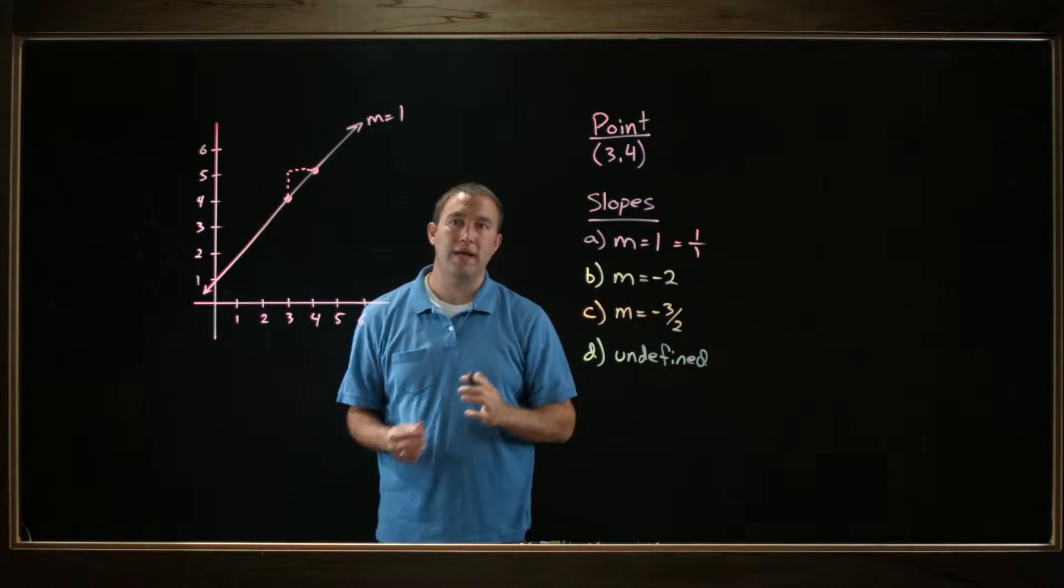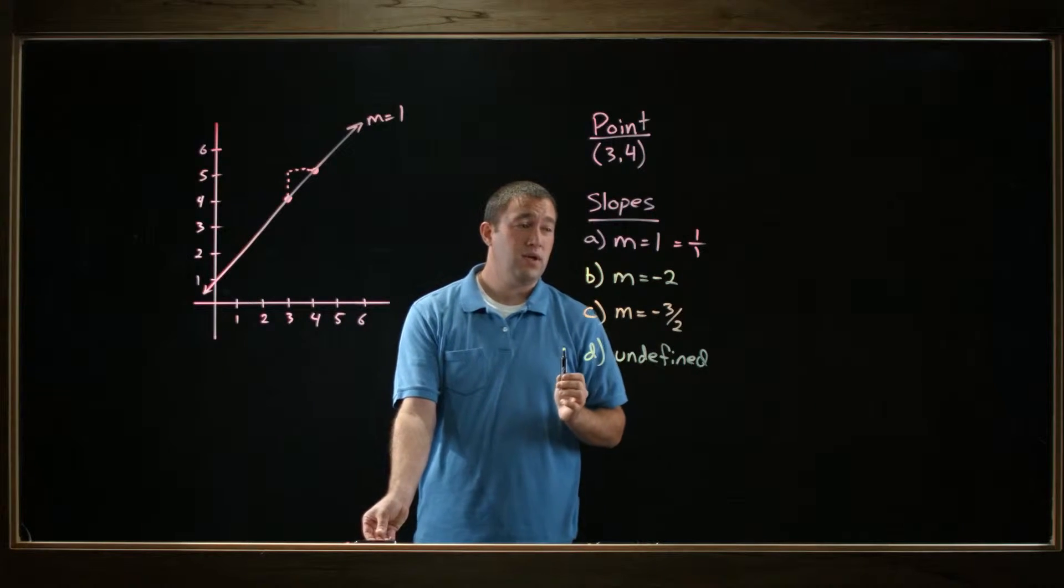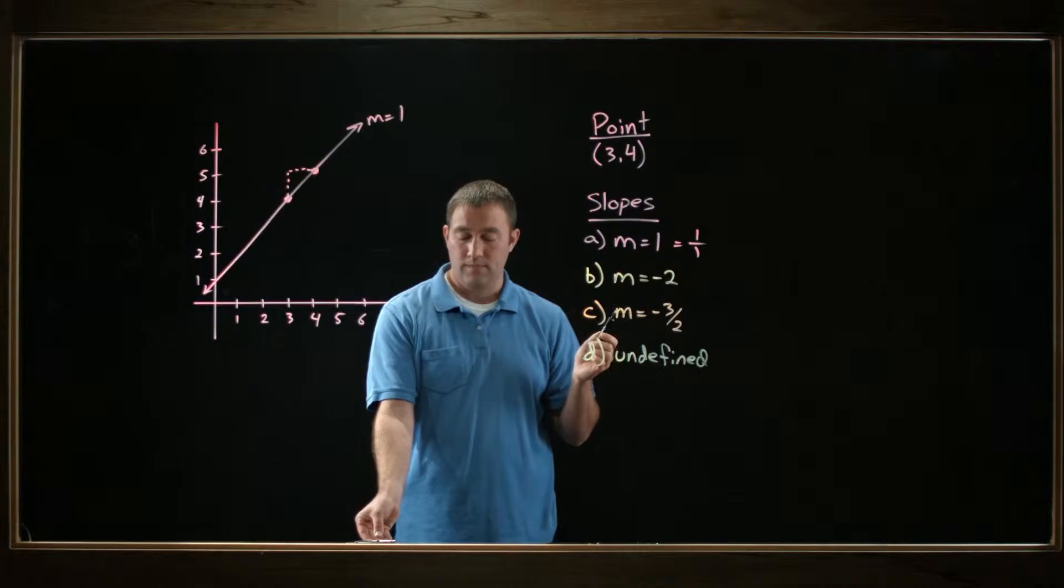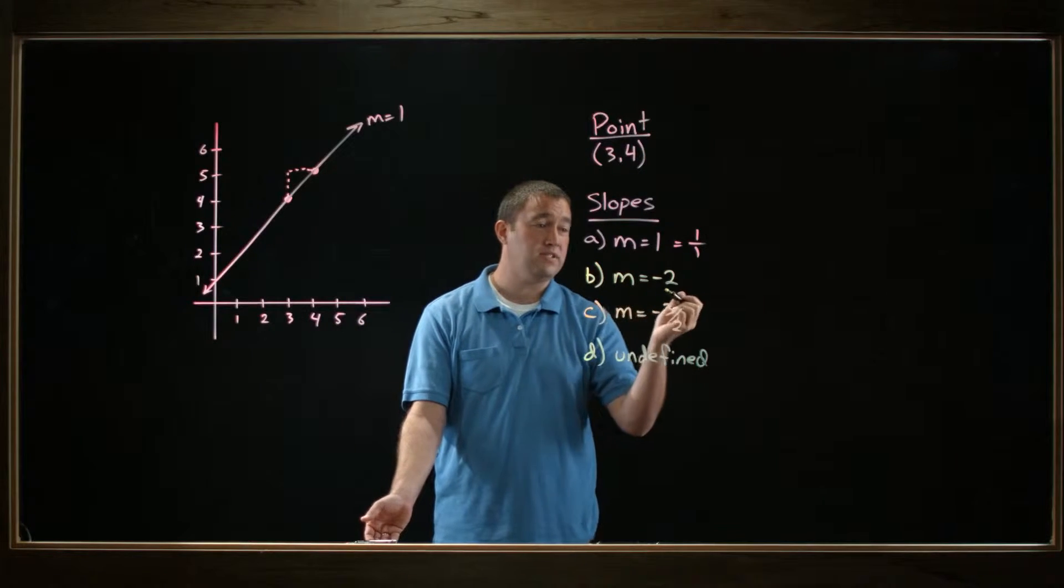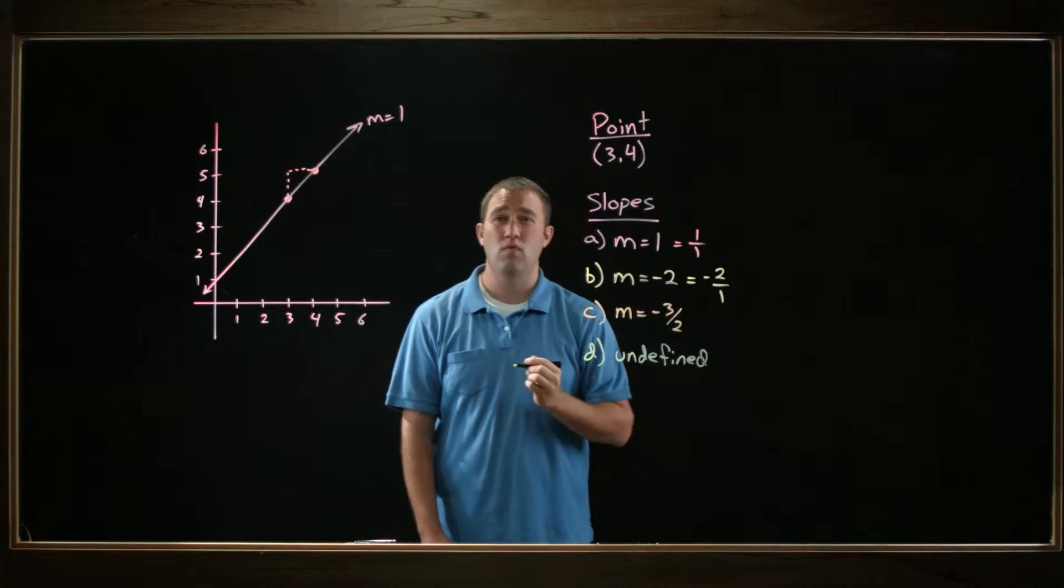OK, not too bad. The next one we're given is a slope of negative 2. So I can write negative 2 a lot of different ways as a ratio, but since it's an integer, I might as well write it as negative 2 over 1.